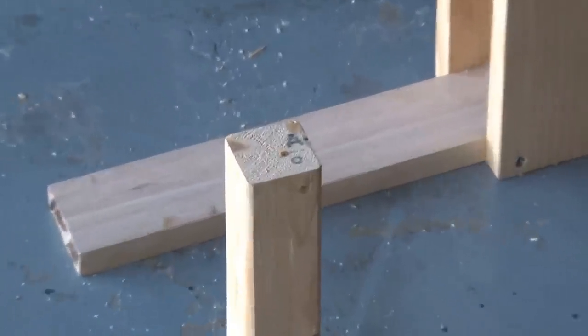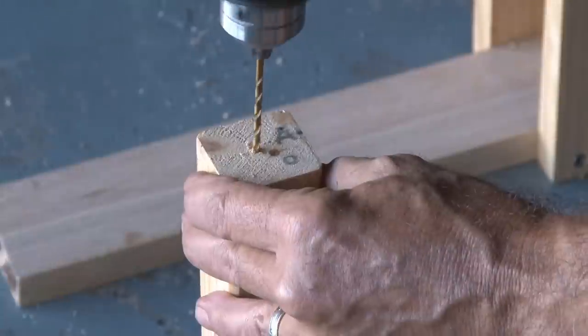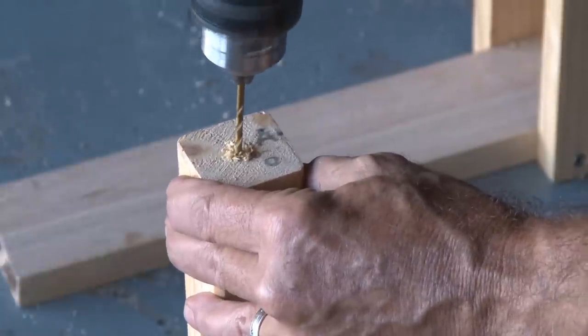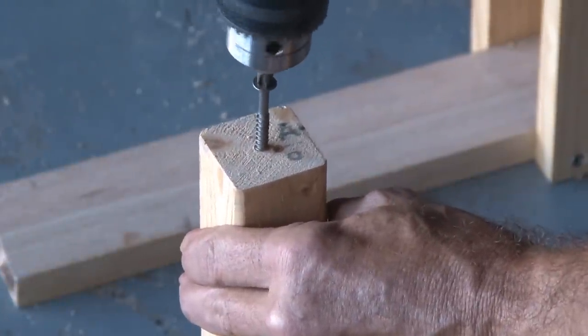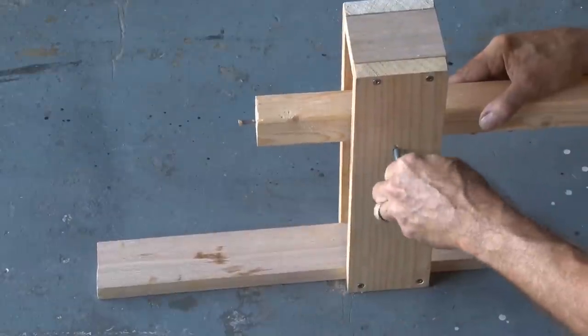Now before we install the hammer, there's one last important step, and that's drilling a small hole in the end of the hammer, and installing our last countersunk flathead screw. Now we can mount the hammer.